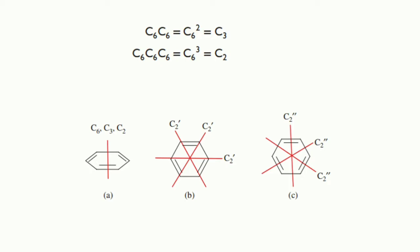Three C6 rotations are equivalent to one C2 rotation. The symmetry operations multiply together as shown in equations. By convention, the last operation written in the product is the one that is always performed first.